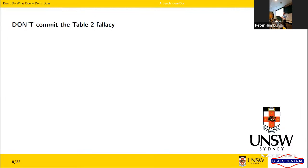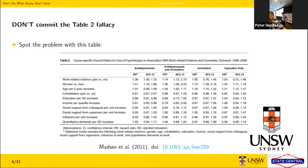Back to a don't. Don't commit the table 2 fallacy. Can anyone spot the problem with this table?